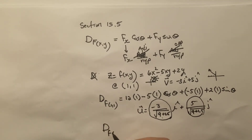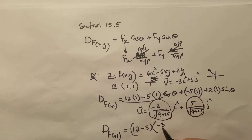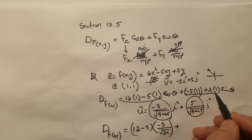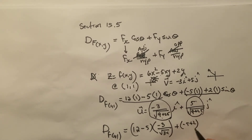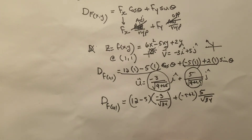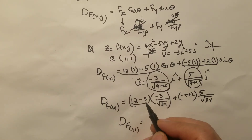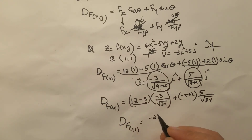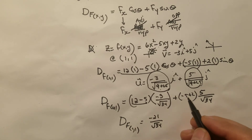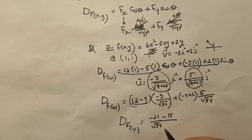Therefore, the directional derivative at the point (1, 1) is: (12 − 5) × (−3/√34) + (−5 + 2) × (5/√34), which equals 7 × (−3/√34) + (−3) × (5/√34), giving −21/√34 + (−15/√34).